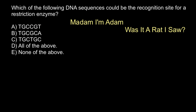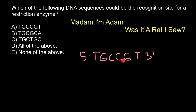For example, take this first sequence — let me write it down: five-prime T-G-C-C-G-T three-prime. If we read it forward: T-G-C; backward also T-G-C — so the sequence would be the same. But this is not how we understand a palindromic sequence in genetics. A palindromic sequence in genetics has to be read on the other strand of the DNA — we have to build the complementary strand.